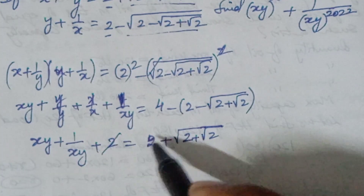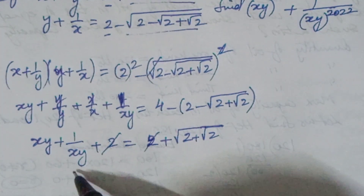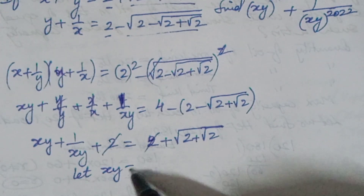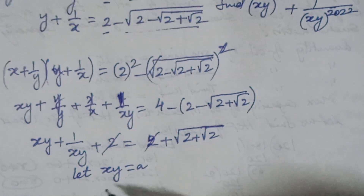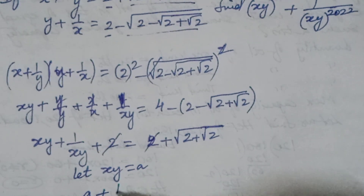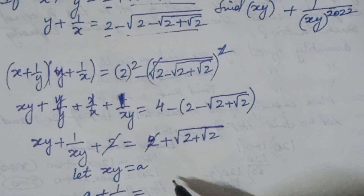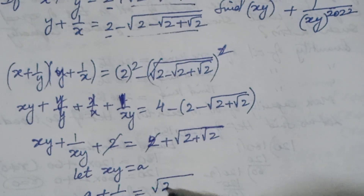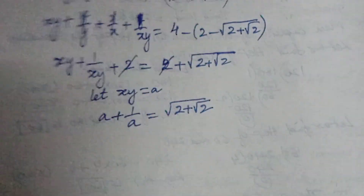The 2s cancel out here. So let us take xy equal to a, so that a plus 1 by a is equal to root of 2 plus root 2.